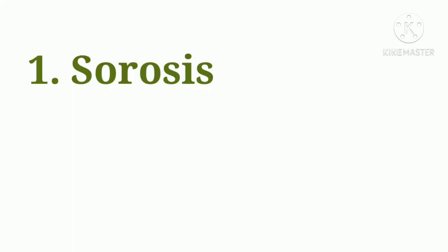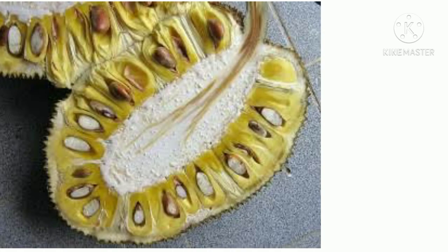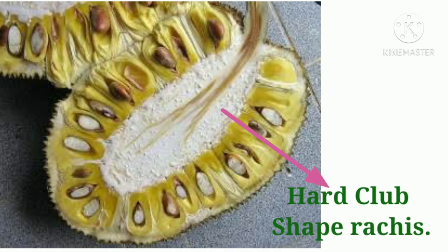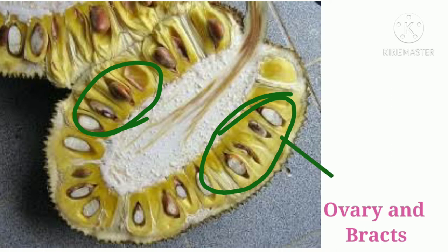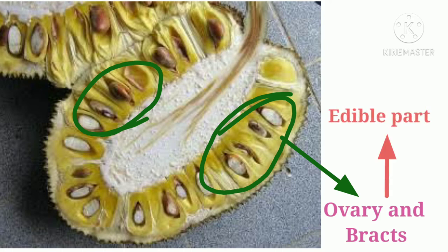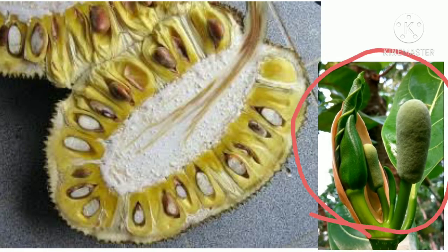The first is the sorosis type fruit. Jackfruit and pineapple are examples of sorosis type fruit. In the case of jackfruit, the rachis, bracts, and perianth are not fleshy — the ovary of fertile flowers and bracts become fleshy and convert into the edible part. Jackfruit is a false fruit because the whole inflorescence converts into a fruit.